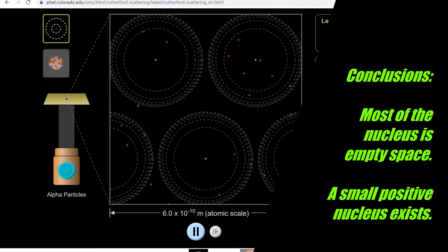First off, because most of the particles went straight through the thin gold foil without scattering, this must mean that most of the nucleus must be empty space.